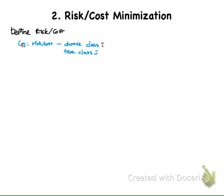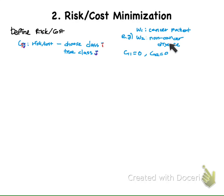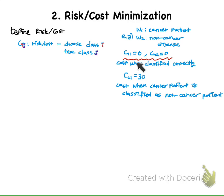Be careful with these indices. For example, when we have two classes of patients — class 1 is the cancer patient and class 2 is the non-cancer disease patient — we say there is no risk for correct classification, so we set C11 to 0 and C22 to 0. But there is a risk when patients are misclassified, so C21 is set to 30, meaning when the cancer patient (class 1) is classified as a non-cancer patient (class 2), the cost is 30.